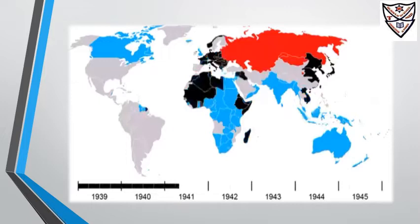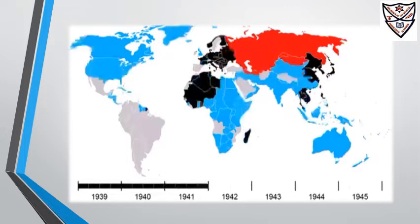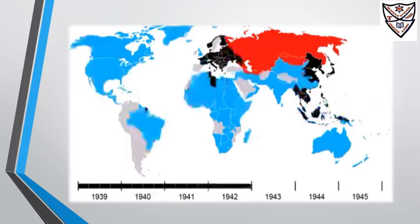The atom bombs killed over three lakh people and left several million homeless. After the Second World War, countries such as Britain, France and the United States of America wanted to replace the League with another organization, which would ensure that such wars did not take place in the future.